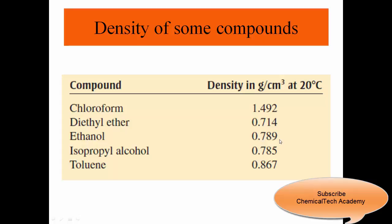Here we have some examples — the density of some compounds. Chloroform, for example, is 1.492. Diethyl ether is 0.714. Ethanol is 0.789. Isopropyl alcohol is 0.785. And toluene is 0.867.